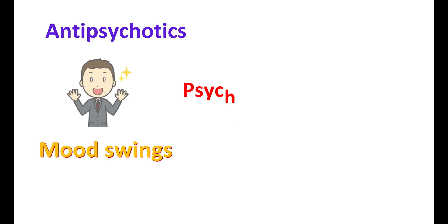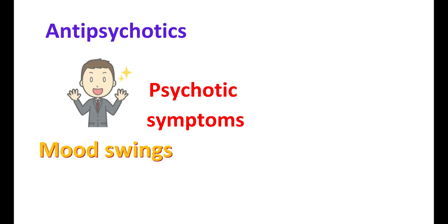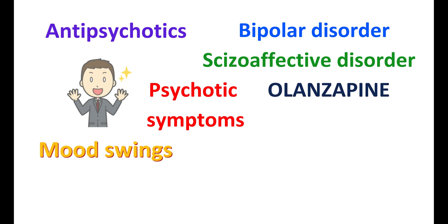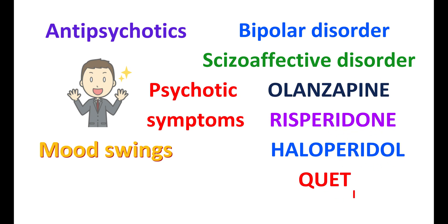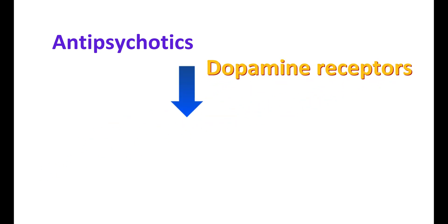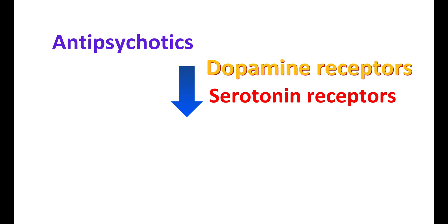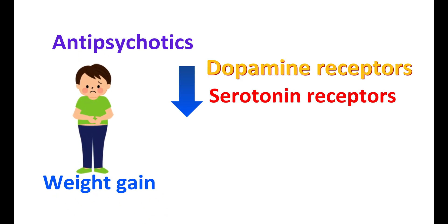The next category of drugs are antipsychotics, which can stabilize mood particularly in people with mood swings associated with psychotic symptoms. People with psychotic symptoms can hear strange voices, and in some cases these symptoms are associated with mood swings. Antipsychotics can be used to control mood swings in both bipolar disorder and schizoaffective disorder. Drugs like olanzapine, risperidone, haloperidol, and quetiapine are particularly used. These antipsychotics block dopamine and serotonin receptors but can cause weight gain, dizziness, and drowsiness.